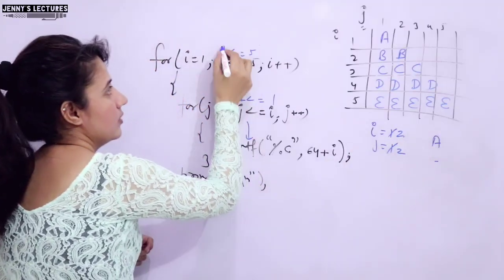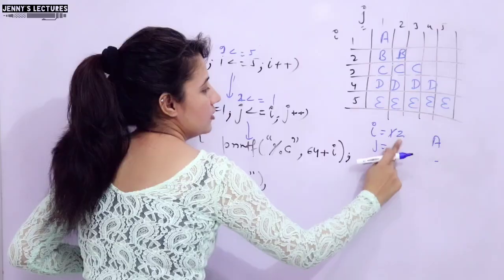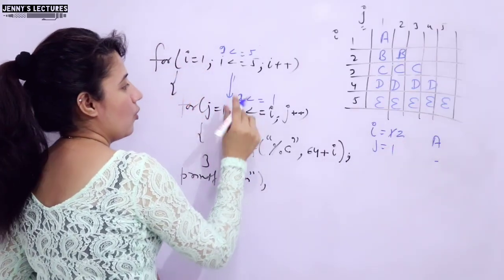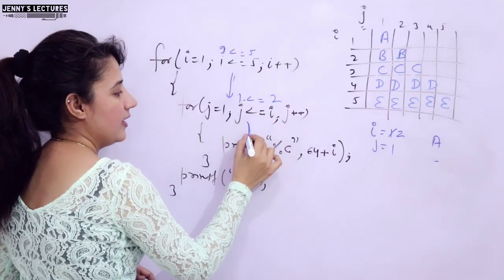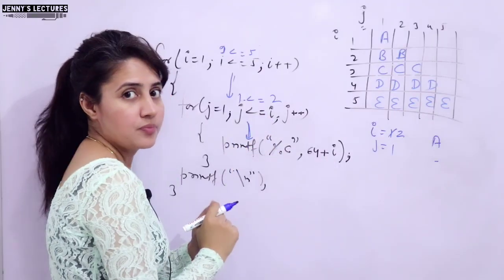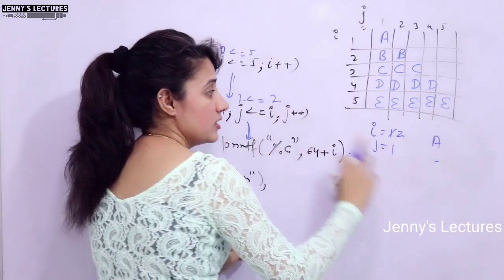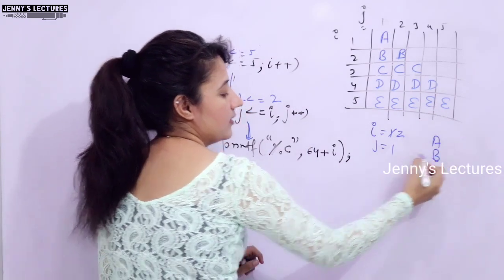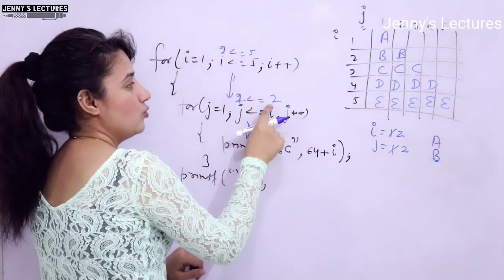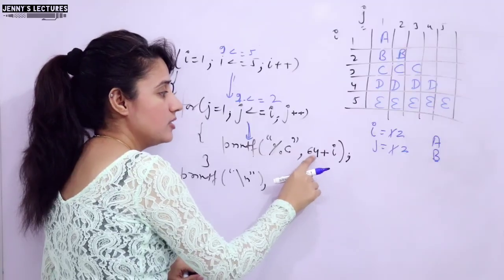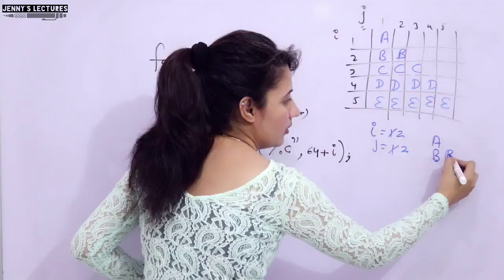i++, i becomes 2 now. Condition true, 2 less than or equal to 5, yes, we will enter again here. J would be again initialized with 1. 1 less than or equal to i value is now 2, yes, condition true. 64 + i, 64 + 2 = 66. Corresponding to 66 we have character B. B would be printed. J++, J is 2. 2 less than or equal to 2, yes, condition true. Again what will print? 64 + i. i value is still 2, means 66. Again B would be printed.